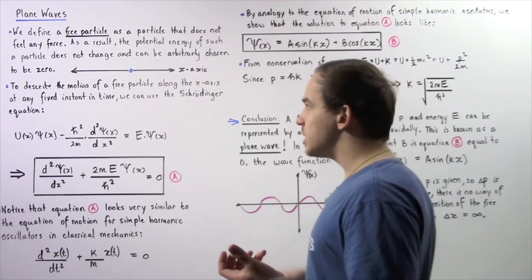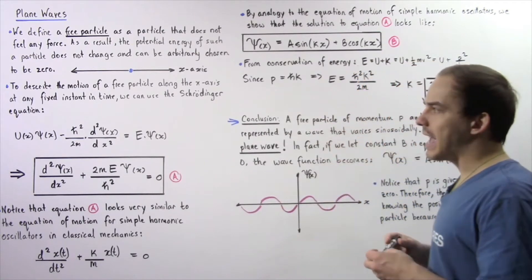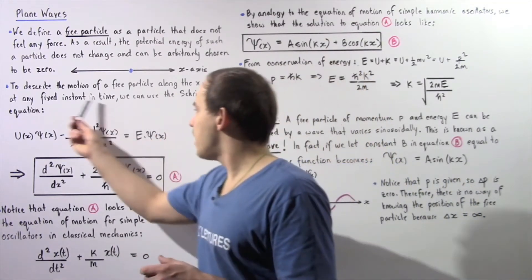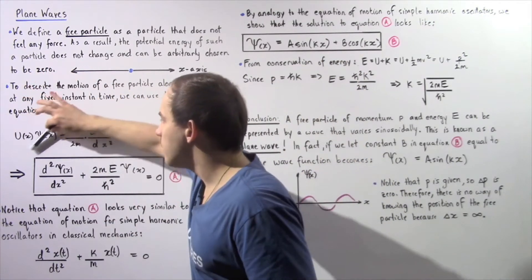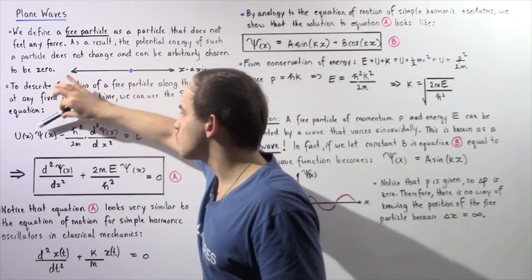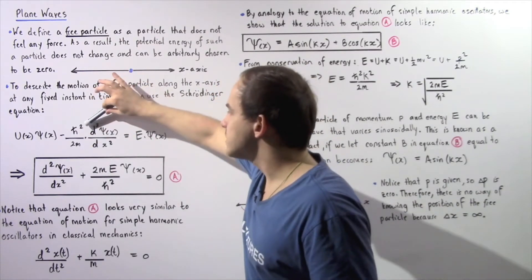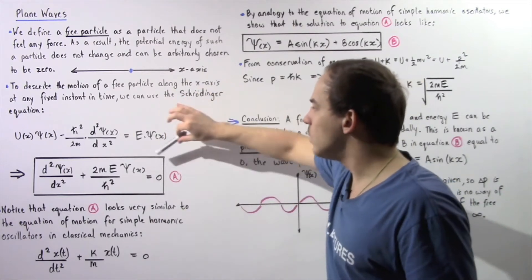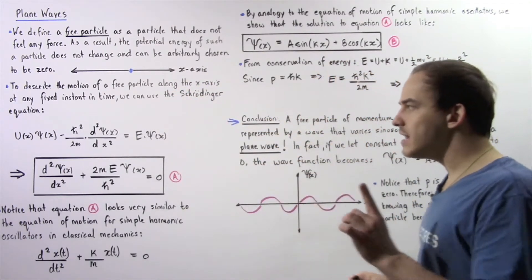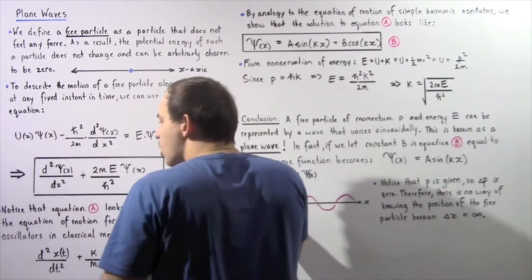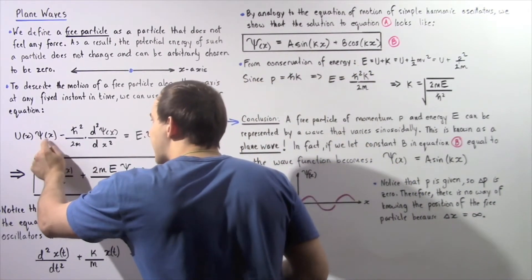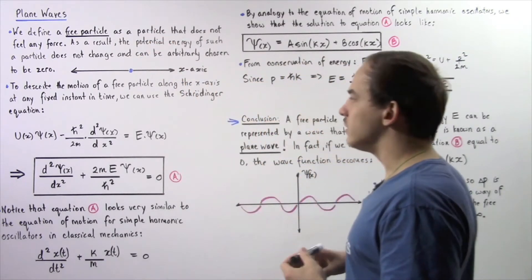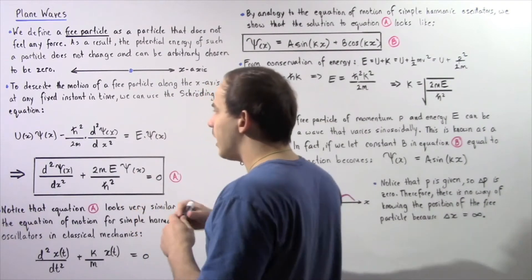How exactly do we describe the motion of this electron as it moves along the x-axis at any fixed instant in time? We can describe it using the time-independent Schrödinger equation. The product of the potential energy of our free particle and the wave function, minus a constant multiplied by the second derivative of our wave function with respect to x, is equal to the total energy E of our free particle multiplied by the wave function. This equation uses the wave function ψ(x), which describes the motion and behavior of our free particle. We can use this equation to solve for the wave function.